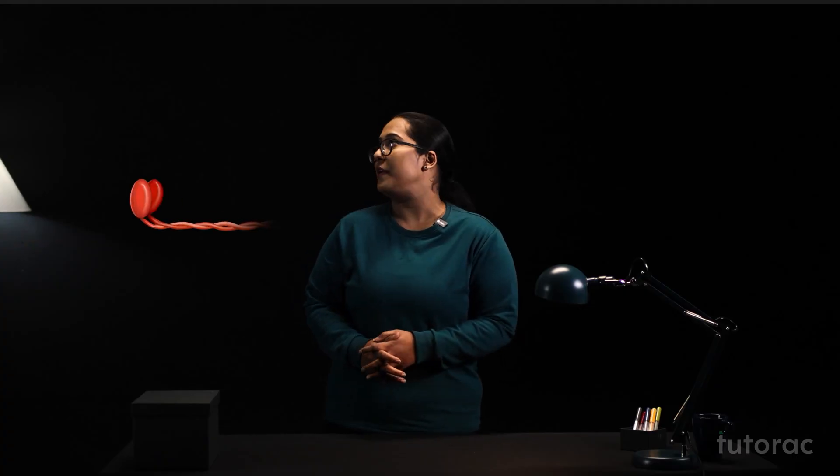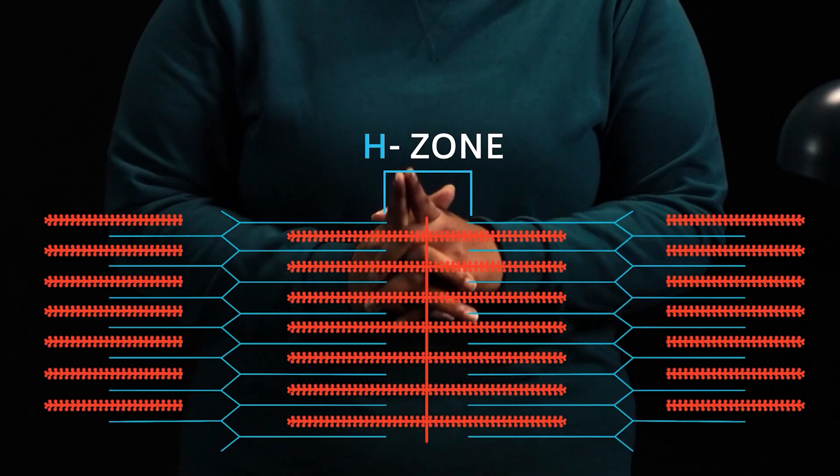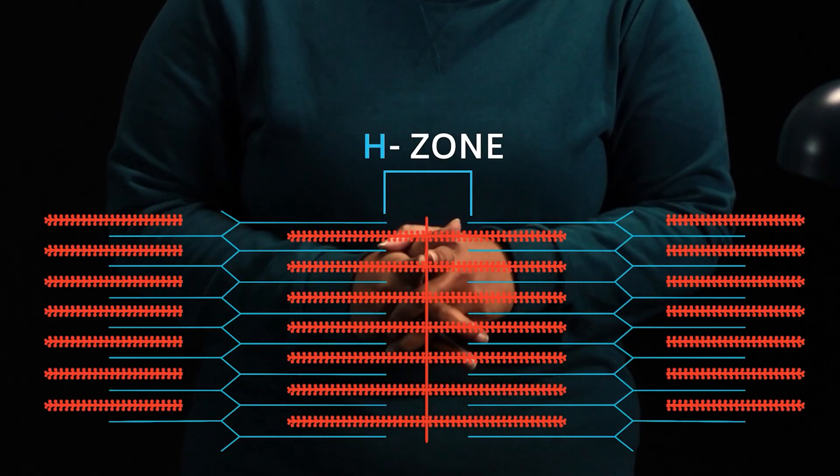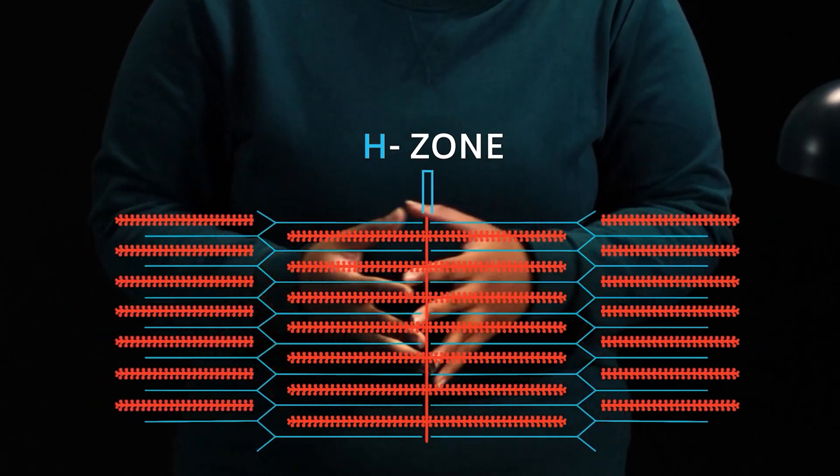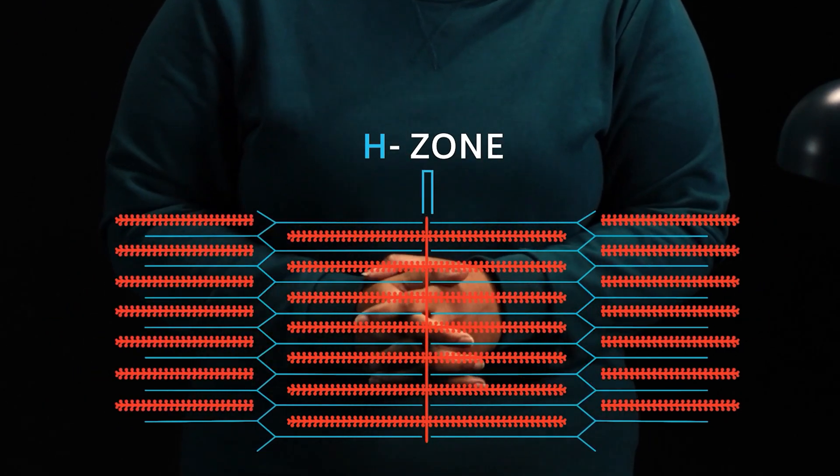Welcome to our course, Locomotion and Movement. In this, we will be discussing the different types of muscles and the structure of sarcomere. After this, we will proceed towards the sliding filament theory and various events that occur during contraction.